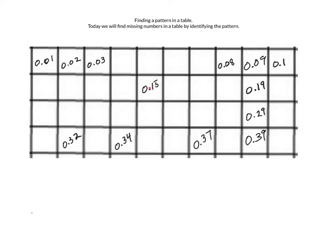Once we know that pattern and how it's progressing, it's easy to tell that if we went to the right of 15 hundredths, we're going to have 16 hundredths there. And if we went below 15 hundredths, it's going to be 25 hundredths.